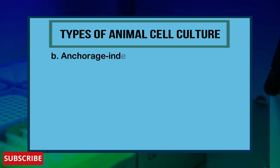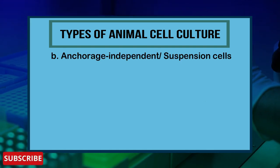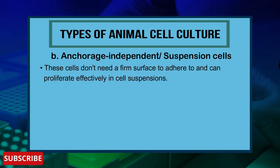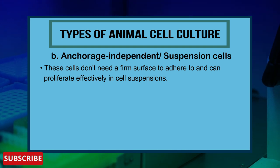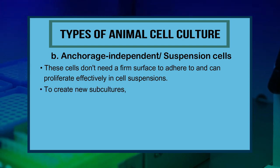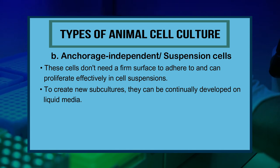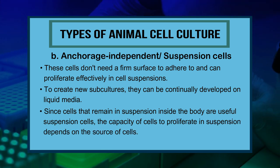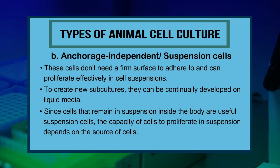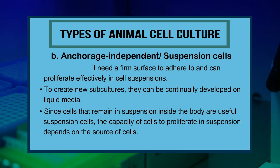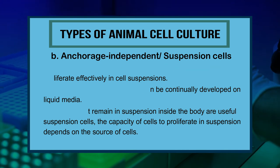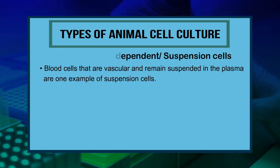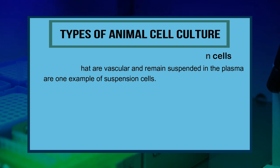Second, anchorage-independent suspension cells: these cells do not need a firm surface to adhere to and can proliferate effectively in cell suspensions. They can be continually developed on liquid media to create new subcultures. The capacity to proliferate in suspension depends on the source of cells. Blood cells that remain suspended in the plasma are one example of suspension cells.